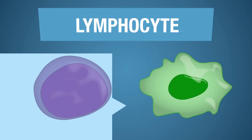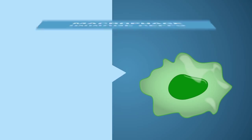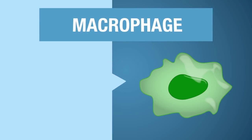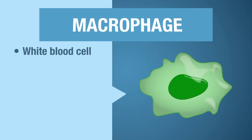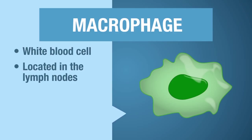The other immune cell that serves as a player in the lymphatic system is this cell here called a macrophage. Macrophages, like lymphocytes, are also white blood cells. Macrophages are housed in the lymph nodes as well as other places throughout the body, but in this video we will only focus on their role in the lymph nodes.